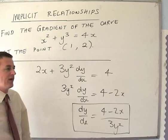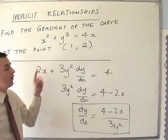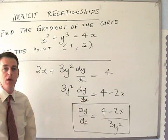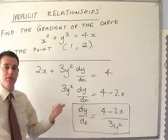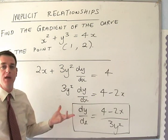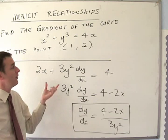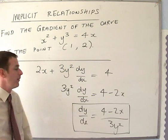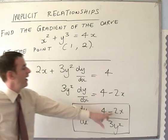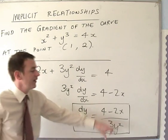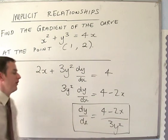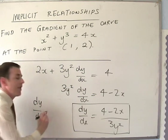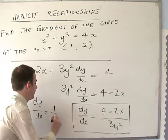Now if we want to find the actual value at the point (1, 2), we stick in x=1 and y=2. Remember that normally we'd just substitute the x value, but now we're substituting both the x and the y. Sticking in x=1 and y=2, we end up with dy/dx at that point equal to one sixth.